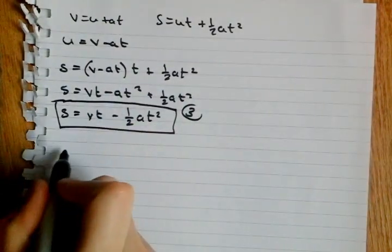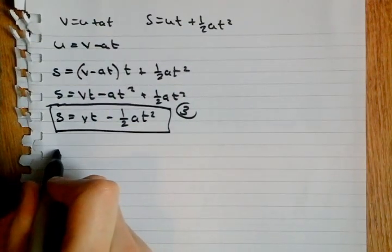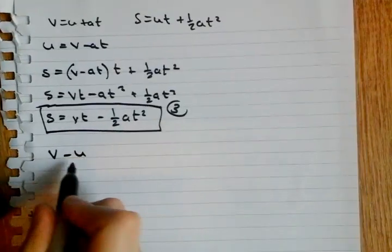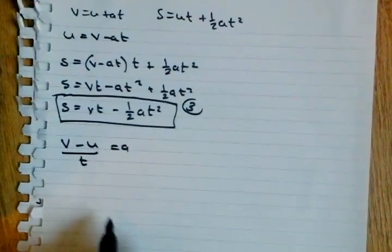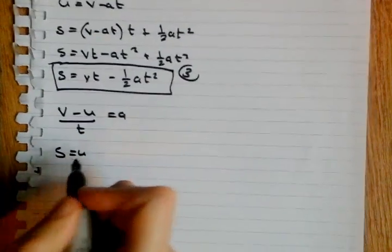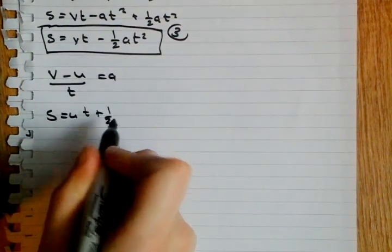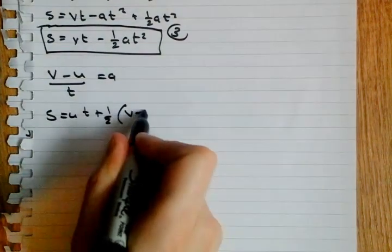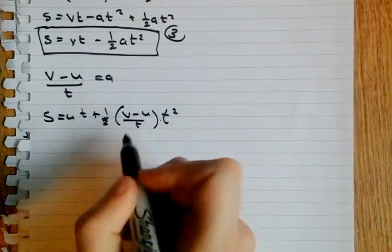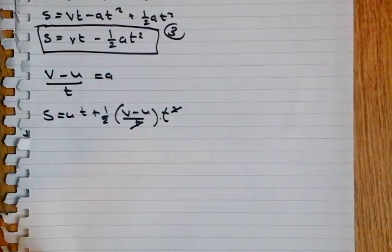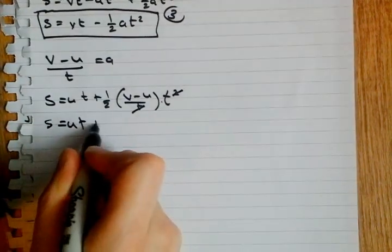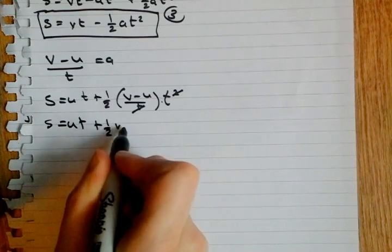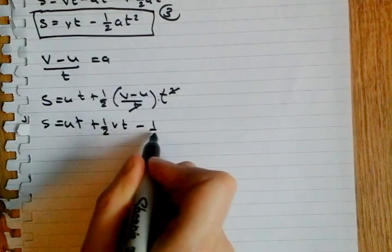Cool. Let's go on to the fourth. We're going to do it for acceleration. So, we need V minus U over T equals A. Now, substitute into here. S equals UT plus a half V minus U over T times T². This T here cancels out with one of the T's in the T². So, if we expand the bracket,